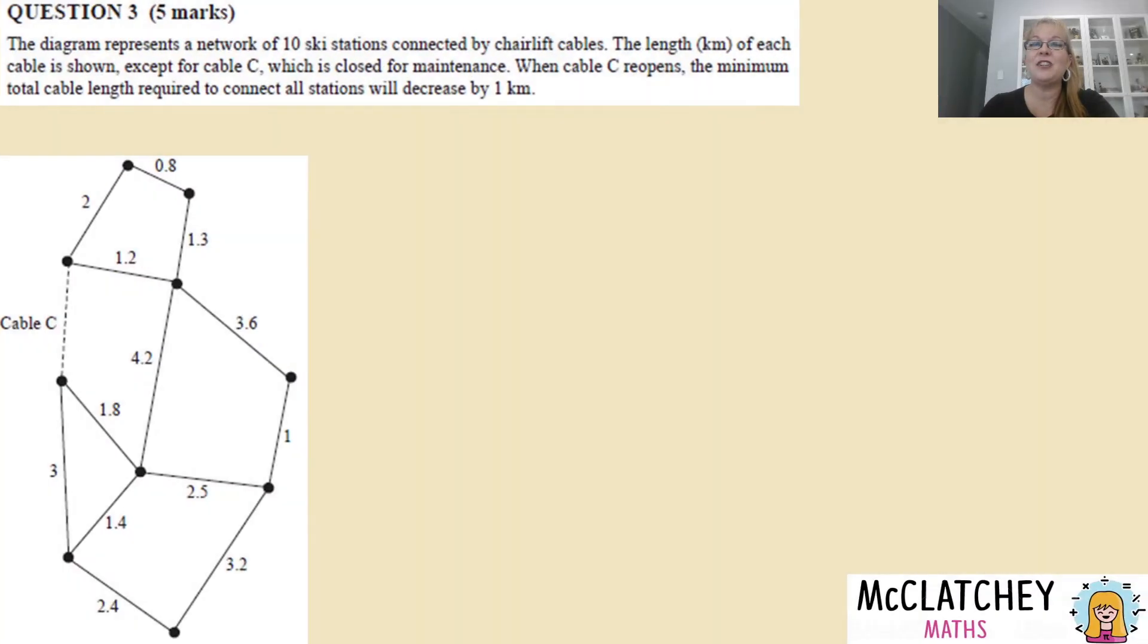Okay let's get straight into question 3. It's worth 5 marks and we've been given a diagram of a network. The diagram represents a network of 10 ski stations connected by chairlift cables. So each of these dots represents a ski station, each of these lines or edges are the chairlift cables to get them from one to the other. The length in kilometers of each cable is shown so for example here that means two kilometers except for cable C which is closed for maintenance.